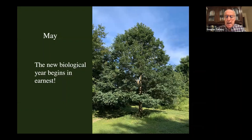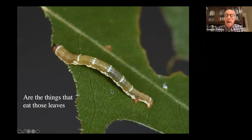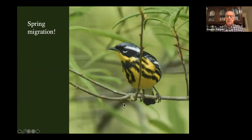In May, you get complete leaf expansion of the oak. It's when the biological season really gets underway. These leaves across the temperate zone are expanding rapidly, and close on the heels of that expansion come the caterpillars that eat those leaves, and close on the heels of those caterpillars come the birds that eat those caterpillars. It is no coincidence that birds migrate up from Central and South America during spring right at the peak emergence of caterpillars.